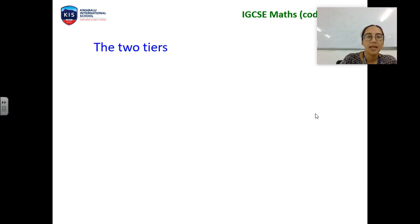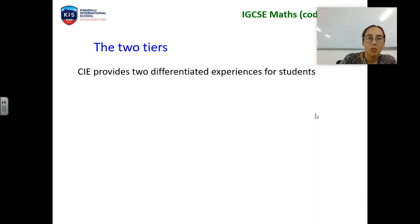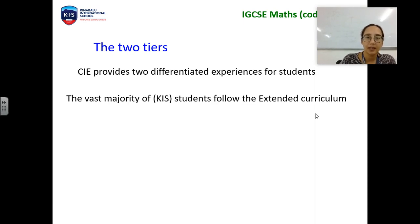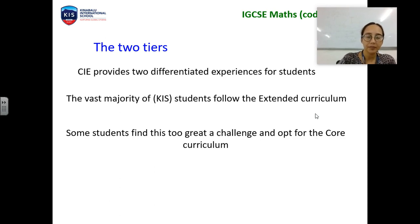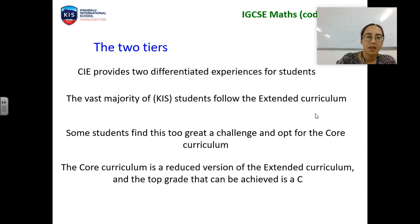Cambridge offer two tiers. One is the extended curriculum, which the majority, if not all, KIS students will follow. Some students who find this too challenging will opt for the core curriculum. The core curriculum is a reduced version of the extended curriculum and the top grade for that is a grade C.